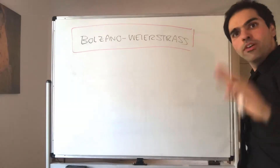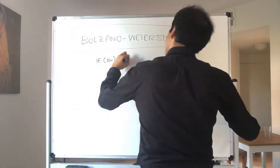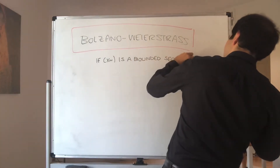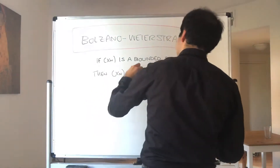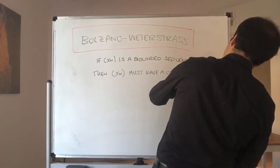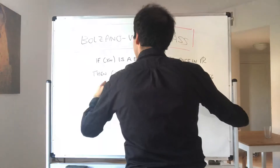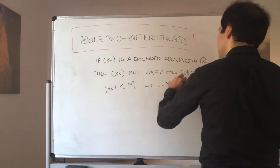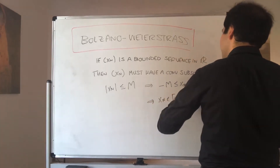The theorem simply says every bounded sequence in R must have a convergent subsequence. So if Xn is a bounded sequence in R, then Xn must have a convergent subsequence. Bounded means that |Xn| is less than or equal to M for some M and all n, which means Xn is between minus M and M, so Xn is in the interval [−M, M].